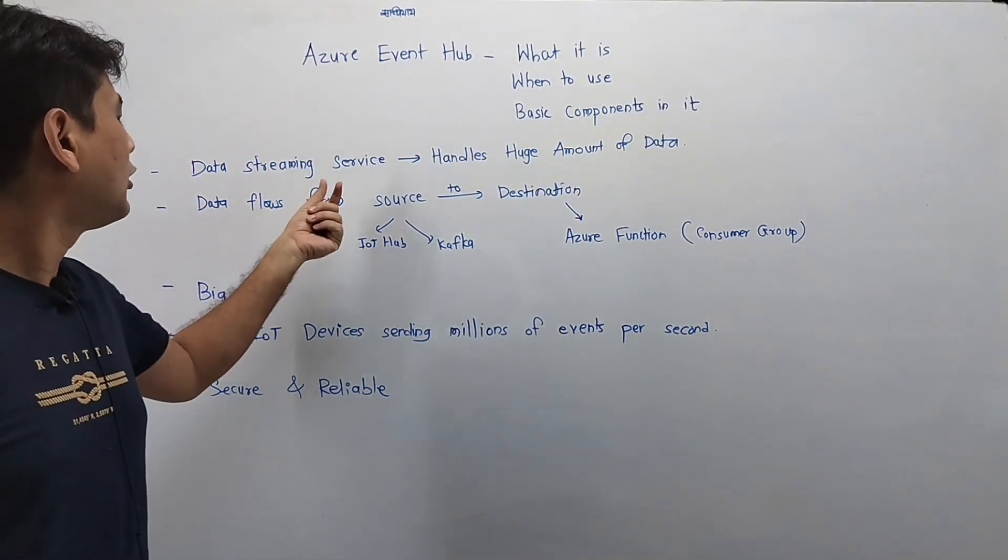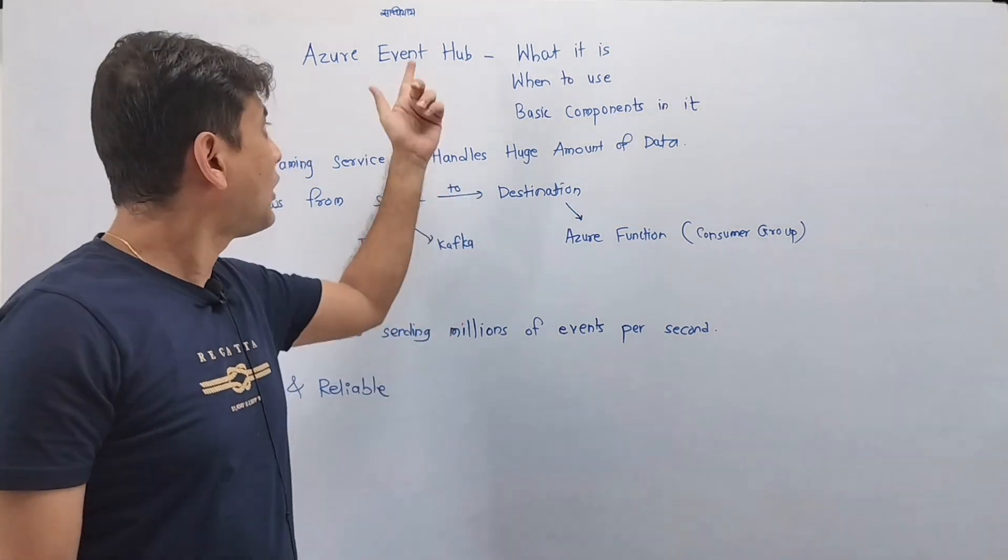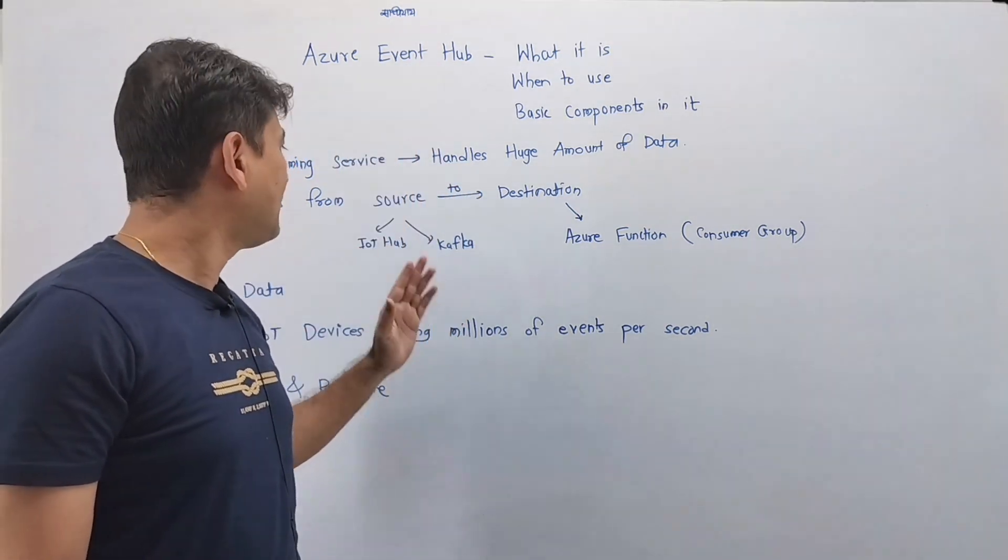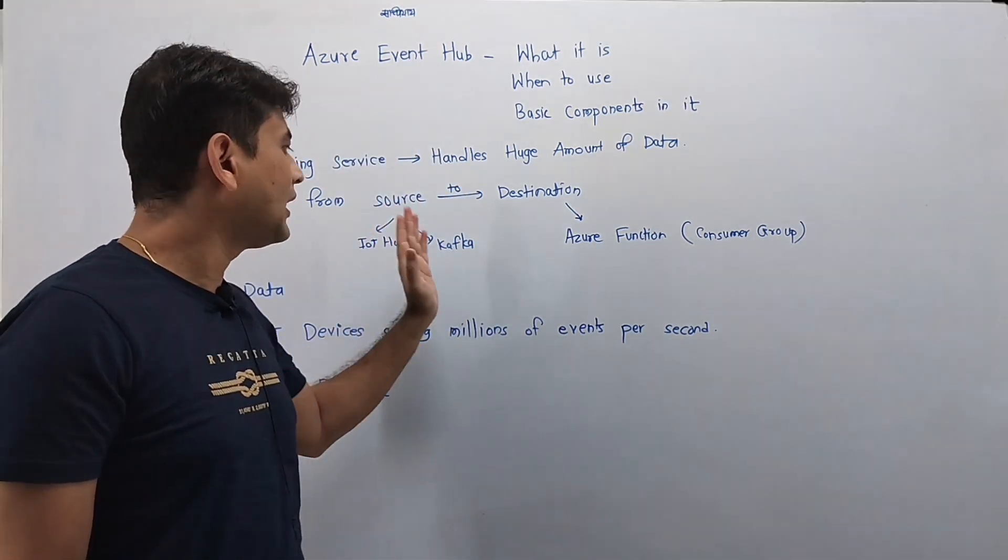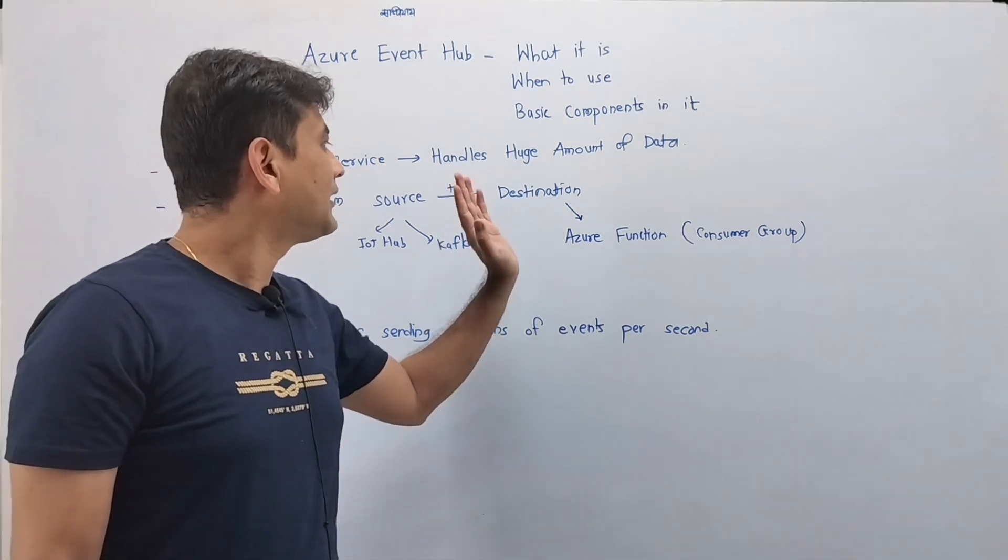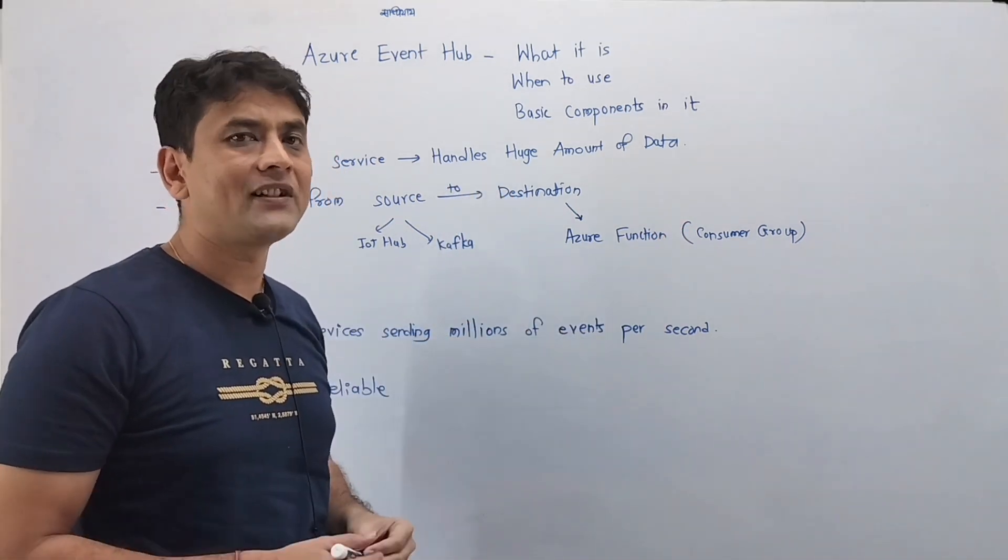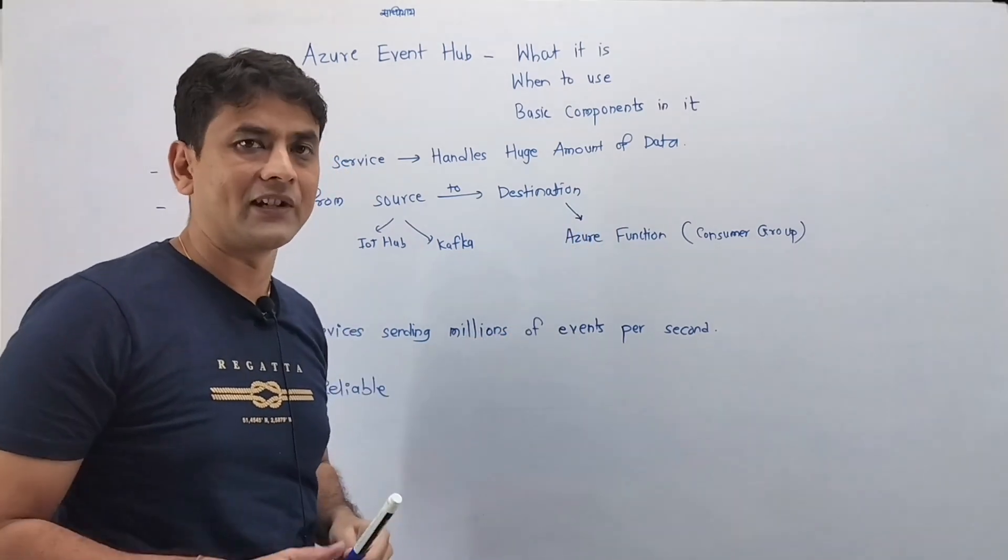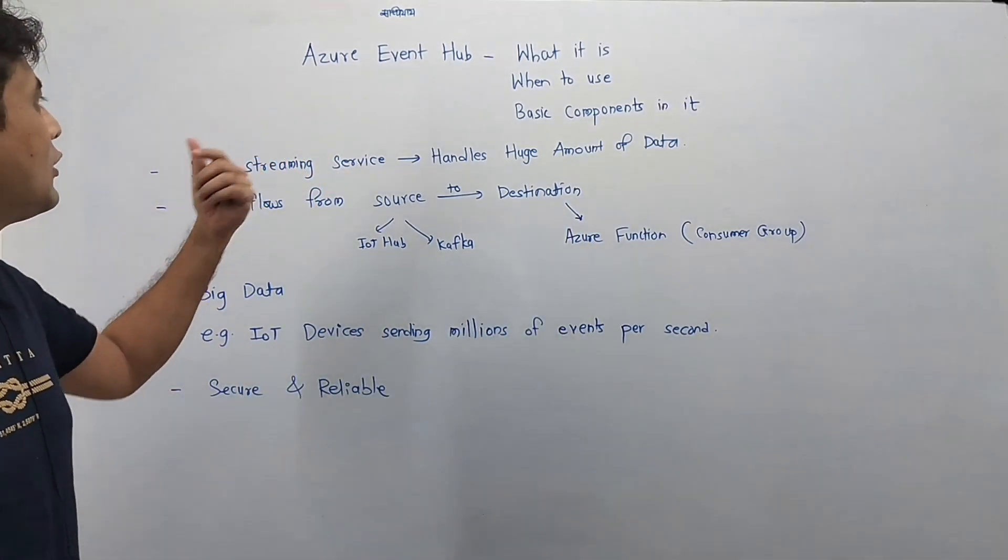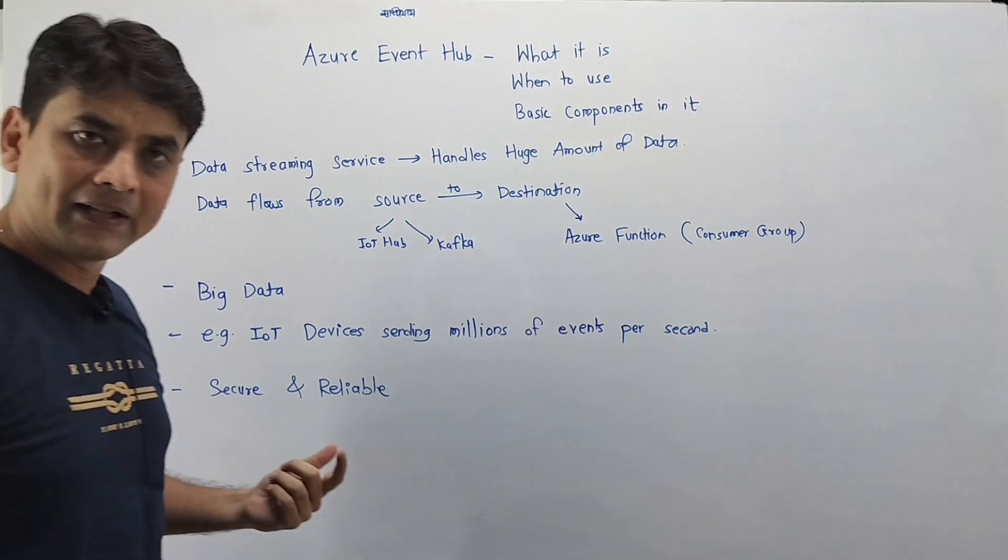Data will flow from source to the destination via Event Hub. As an example, you can consider source as IoT Hub or Kafka and the destination, actually its consumer group, but for simplicity consider Azure function as an example of destination. Then you can use Event Hub in big data.